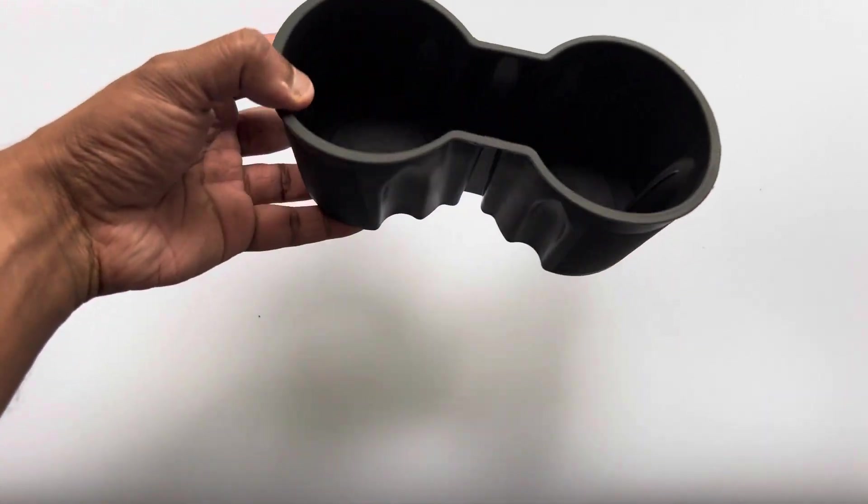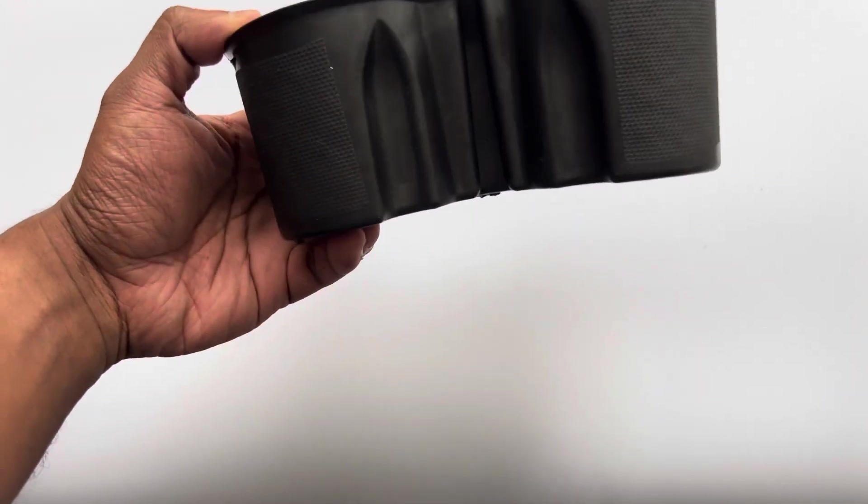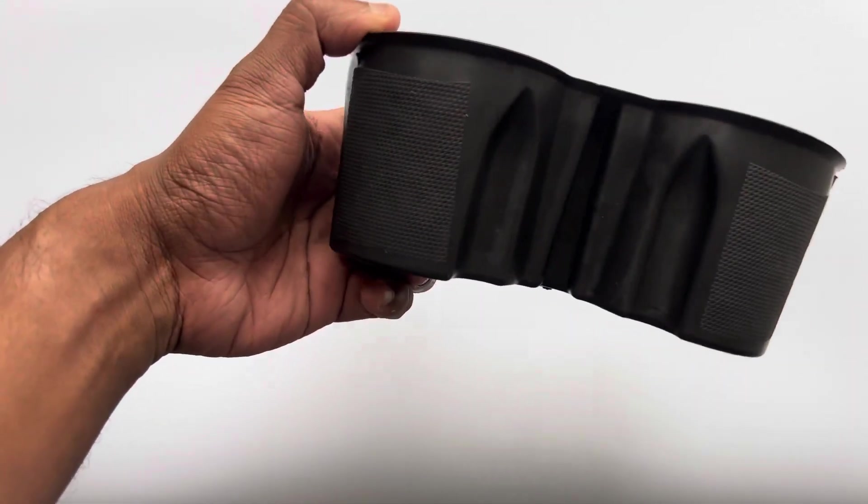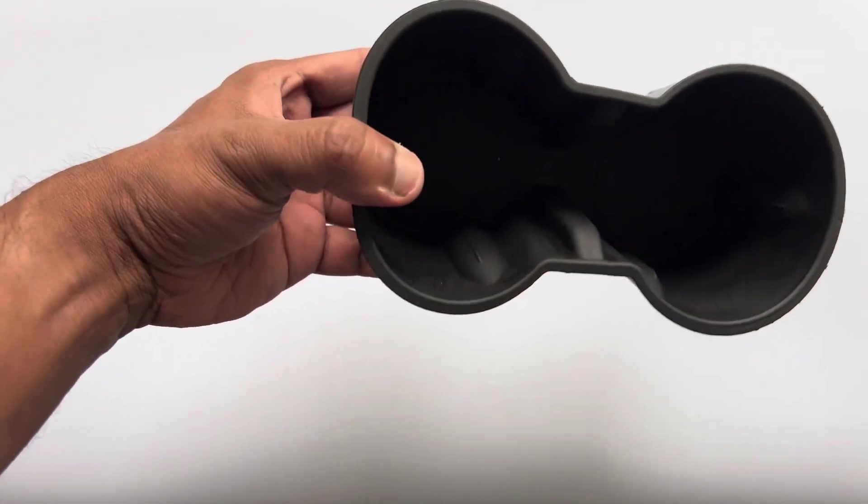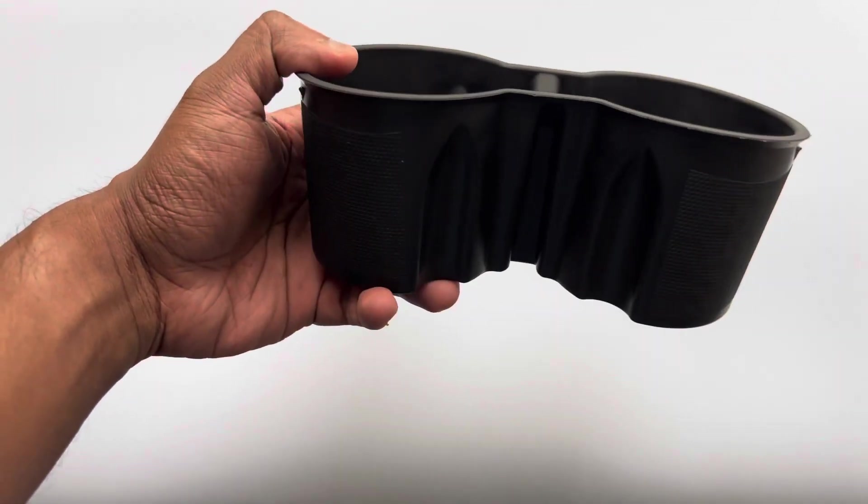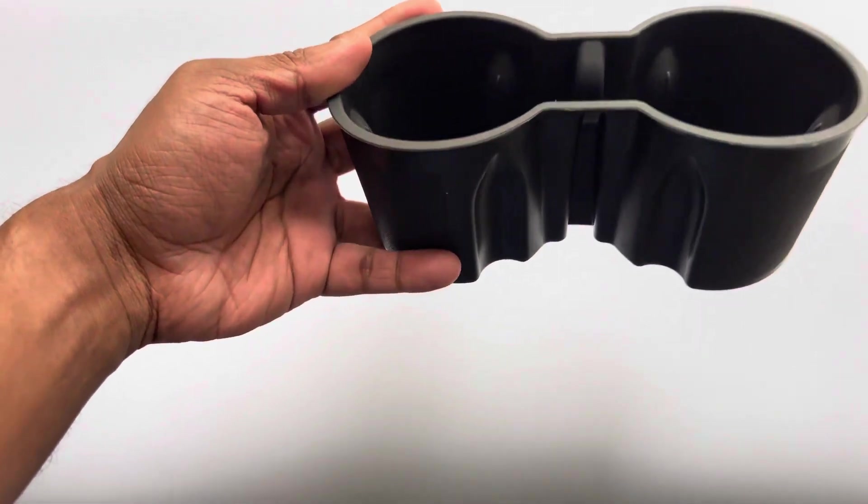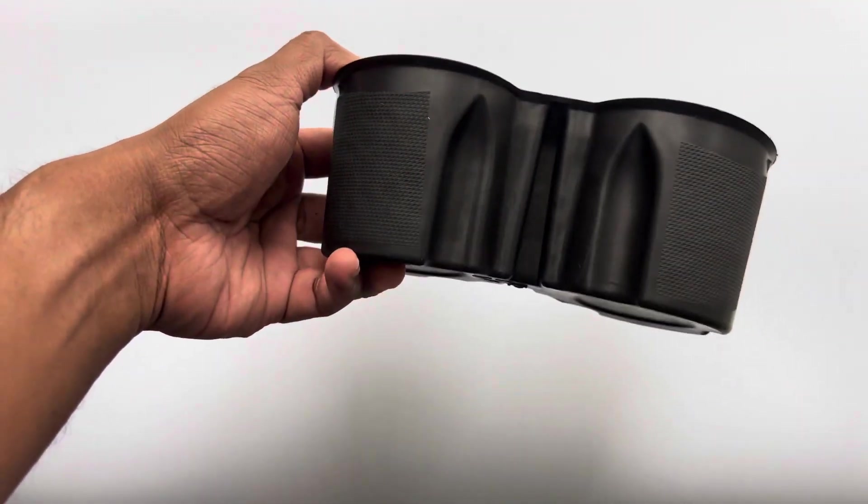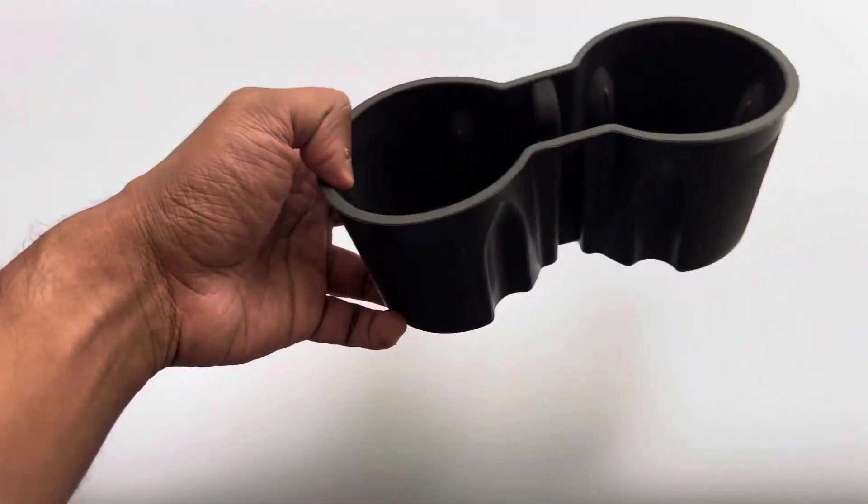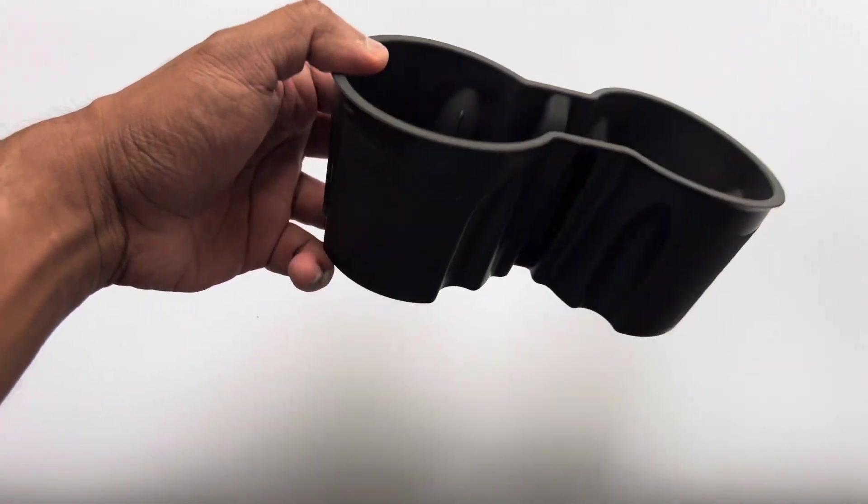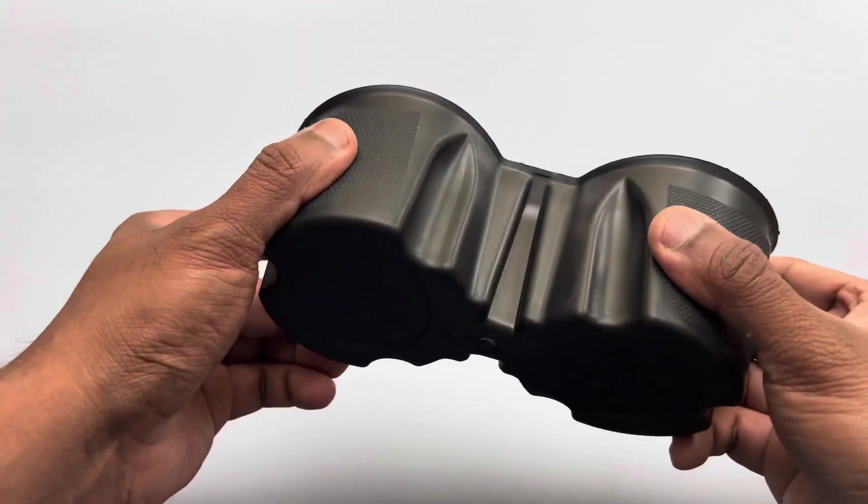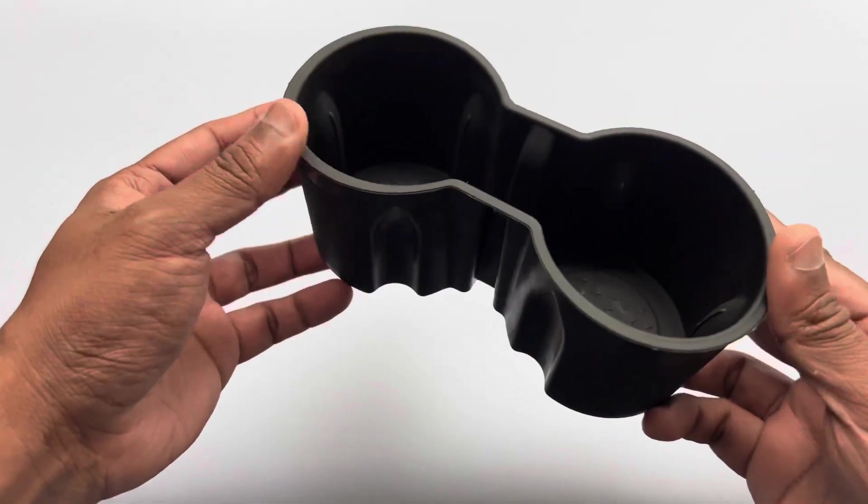I thought maybe I'll just wait a couple of months, and then I decided to go with this center console cup holder insert. It's from a company called Motrobe, it's around 22 bucks with a 10% coupon. I purchased it and received it yesterday.